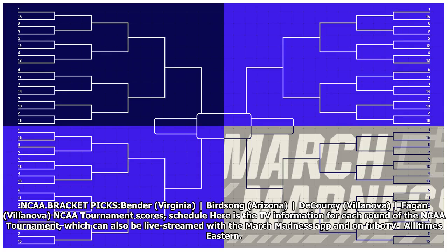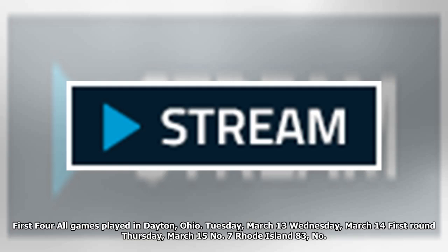NCAA Bracket Picks: Bender picks Virginia, Birdsong picks Arizona, Kersey picks Villanova, Fagan picks Villanova. NCAA Tournament scores and schedule — here is the TV information for each round of the NCAA Tournament, which can also be live streamed with the March Madness app and on FuboTV. All times Eastern.